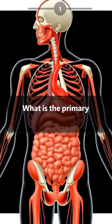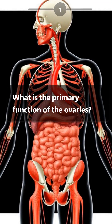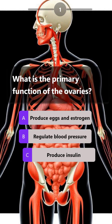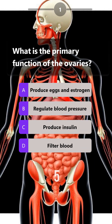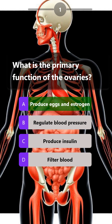What is the primary function of the ovaries? Produce eggs and estrogen, regulate blood pressure, produce insulin, filter blood. Answer is: produce eggs and estrogen.